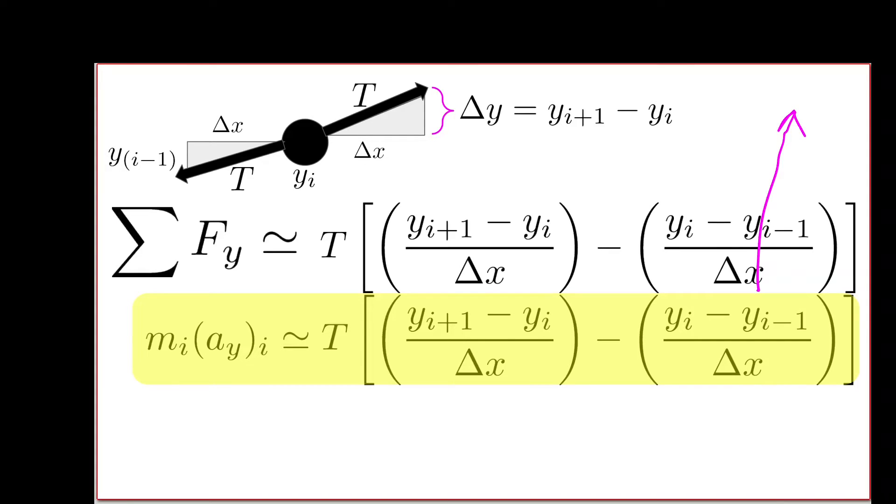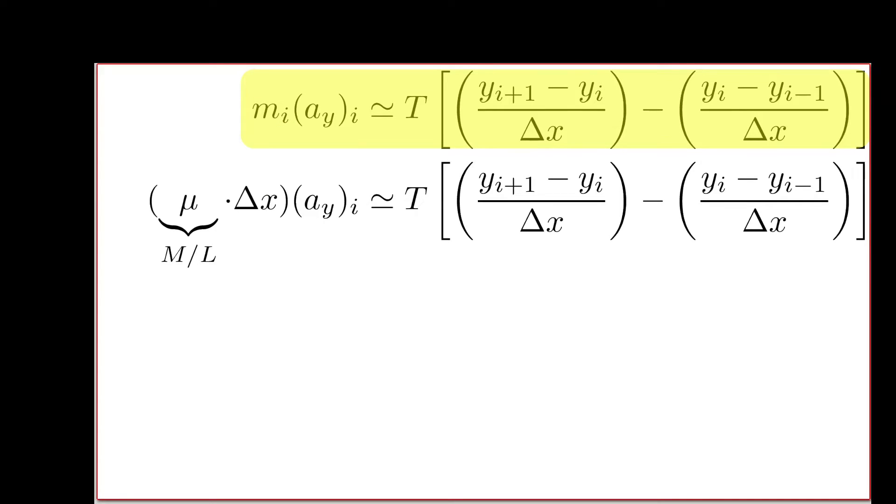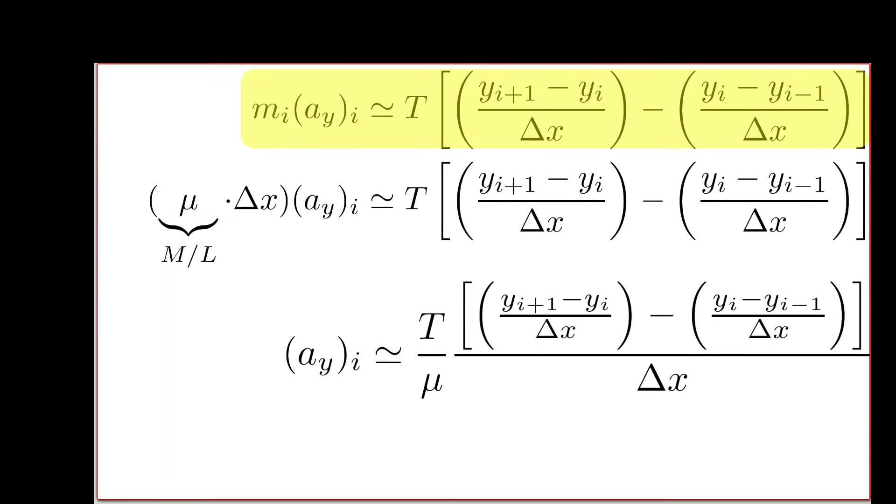Now we'd like to think about how m sub i relates to the overall mass of our string, capital M, and its overall length, capital L. We can express that ratio, mass per length, as this quantity which we'll call μ, the linear mass density. If I buy some wire and it weighs 10 grams per meter, that density is what's represented by this letter. The mass of one particle in our chain is μ delta x. We can divide both sides of this equation by μ delta x. Now we have acceleration by itself. This is a good step because when I have an expression for acceleration, I can begin to make predictions for how things are going to change in time.